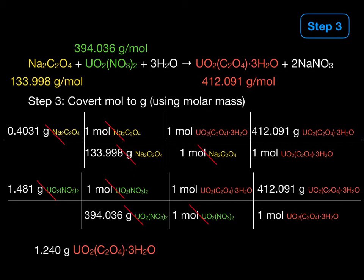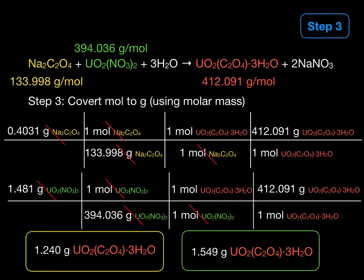So what we see from the top calculation is 1.240 grams of product. In the bottom we have 1.549 grams of product. So I'm going to highlight that one in yellow and this one in green so you know which starting material gave these different amounts.